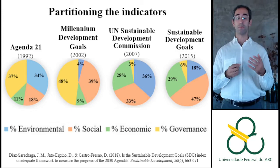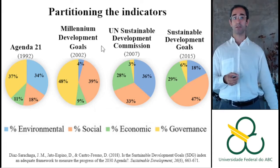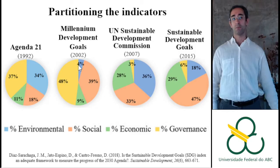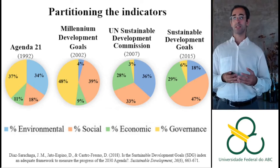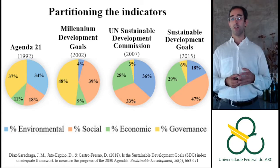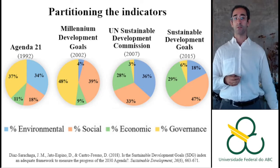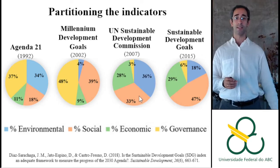In the Millennium Development Goals of 2002, social indicators increased enormously, becoming much more numerous than environmental ones, which got just 4%. Governance indicators increased 2% and economic ones decreased. When the UN commission began discussing what the new set of sustainability indicators should look like starting in 2015, they proposed a balance of roughly one third for each aspect with just 3% for governance.